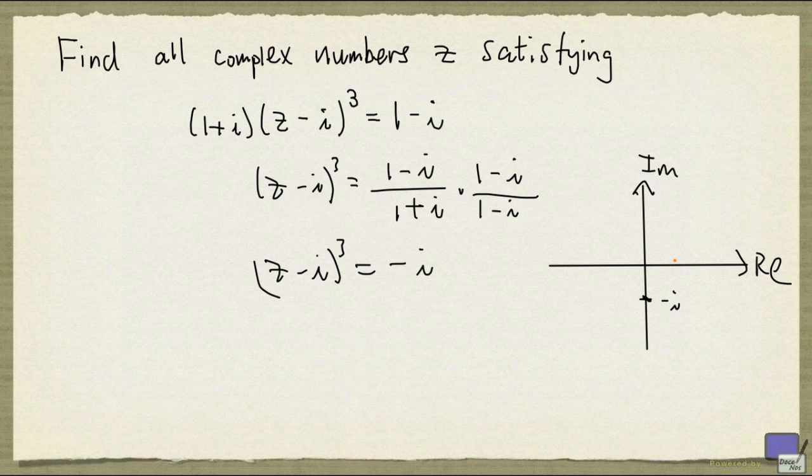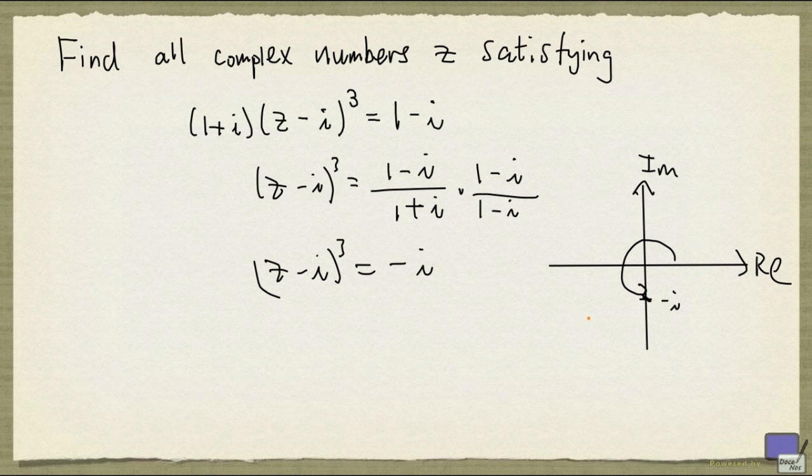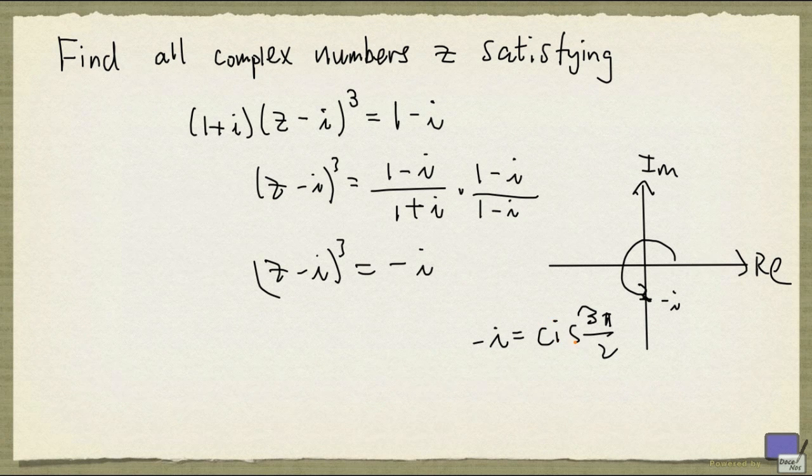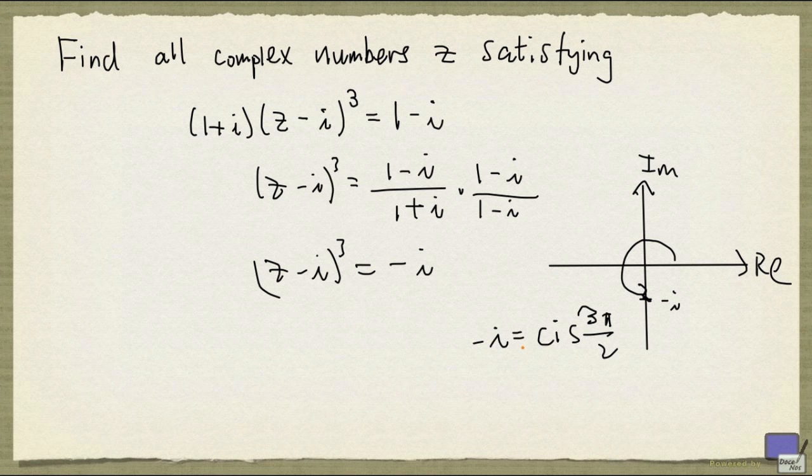And the argument is going to be 3pi over 2, and the modulus is going to be 1. So minus i is given by cis 3pi over 2.